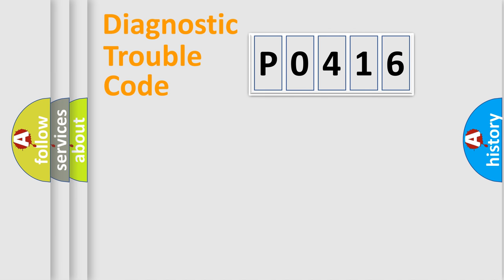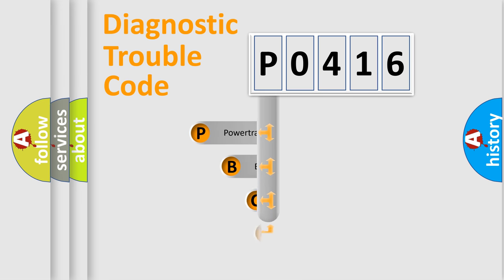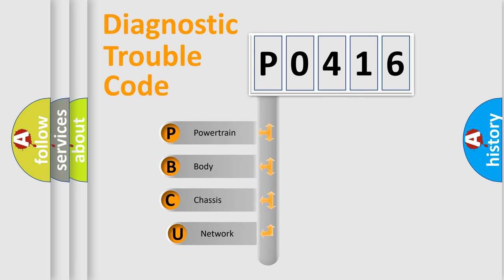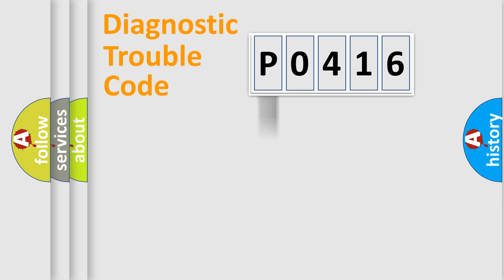First, let's look at the history of diagnostic fault code composition according to the OBD2 protocol, which is unified for all automakers since 2000. We divide the electric system of an automobile into four basic units: Powertrain, Body, Chassis, and Network.